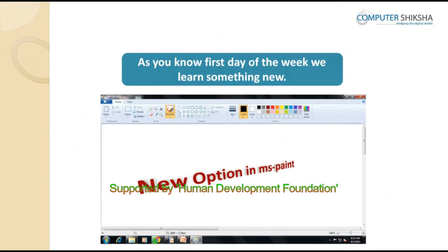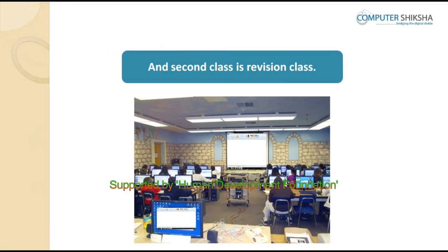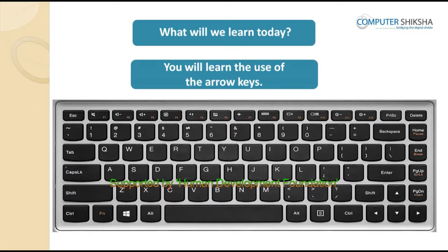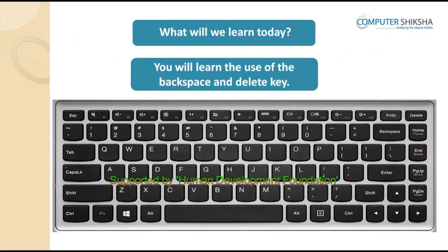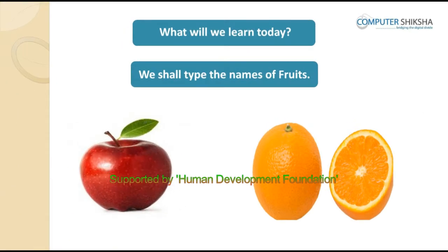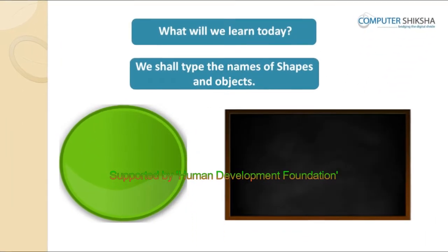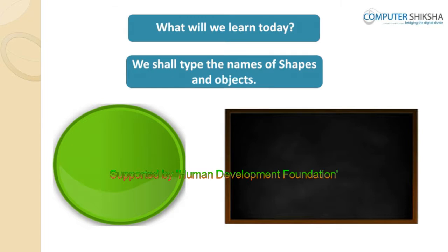By now, you all know that on the first day of the week we learn something new, and on the next day we practice the same topics. Today, by watching the video, you will learn the use of the arrow key, Backspace key and Delete key, and after that you will be asked to type. In today's class, we shall type the names of fruits, vegetables, shapes, numbers and different objects.